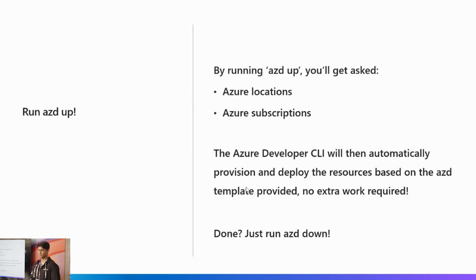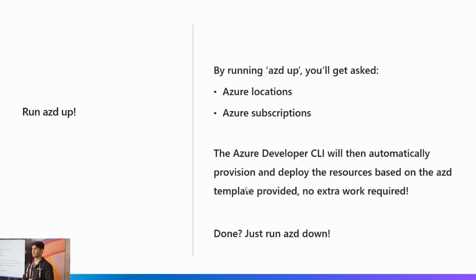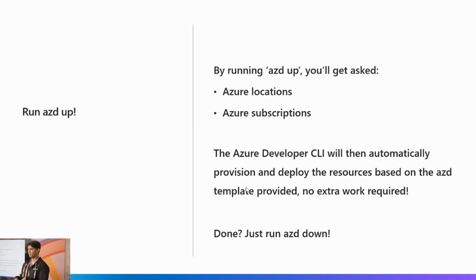Then the next step is to put it on the cloud, which is very easy — you just run AZD up. This command asks you for specifics like your Azure location, such as US East 2, and your subscription. Once those two questions are answered, it knows enough to provision all the resources and deploy all the code you want on Azure, with no extra work required. And when you're done and want to tear down resources, you just run AZD down. For developers, this is great for billing, prototyping, and experimenting — you can spin something up, explore it, and tear it down when you're ready.